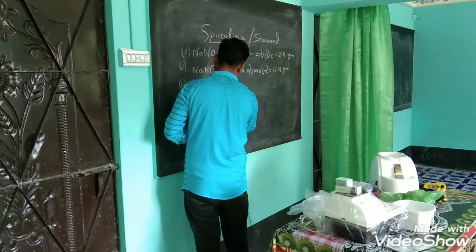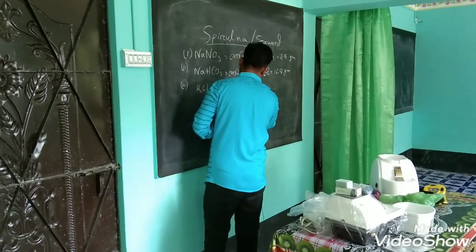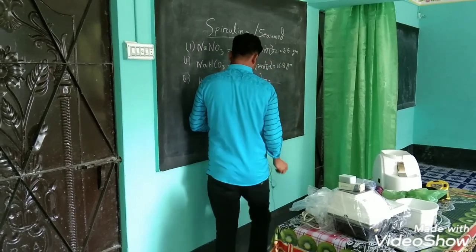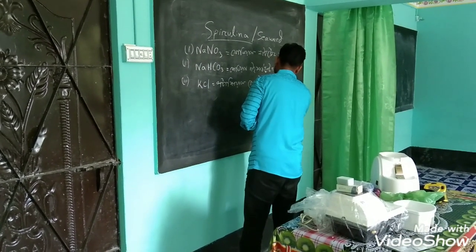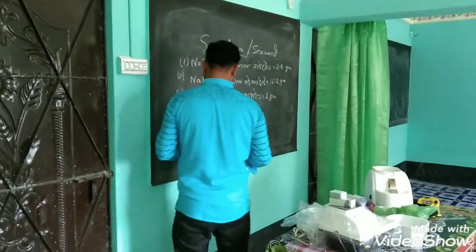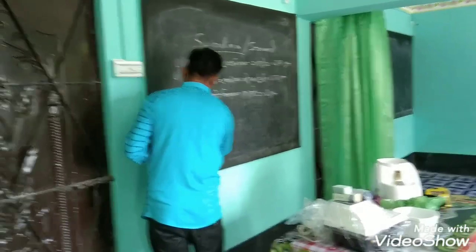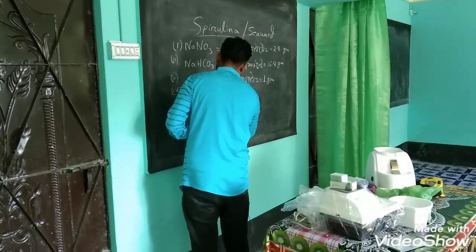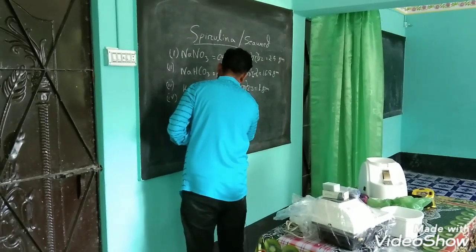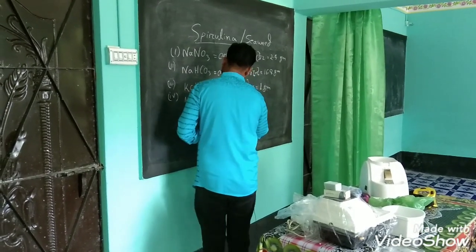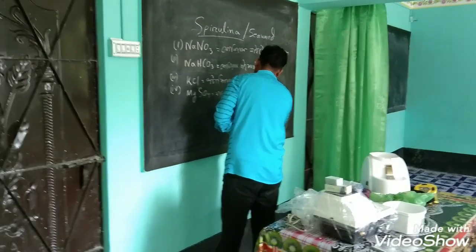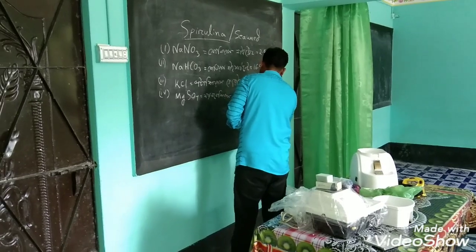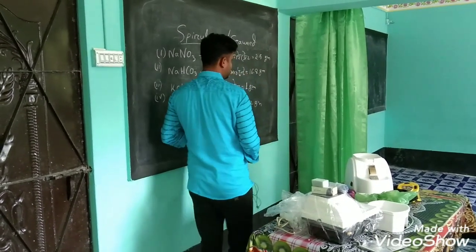Potassium chloride, even 1 gram. Magnesium sulfate — MgSO4. Magnesium sulfate, magnesium sulfate. Use 0.2 gram per one liter.